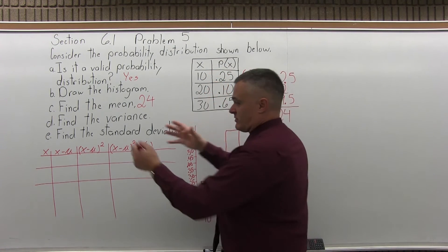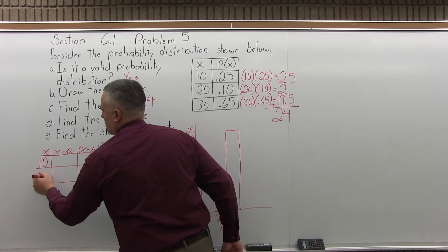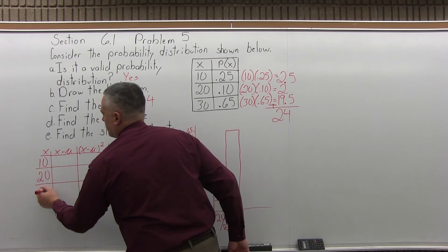So the x values are the easiest column to fill in. Then 20, 30. So you go over to the x column. 10, 20, 30. There they are.